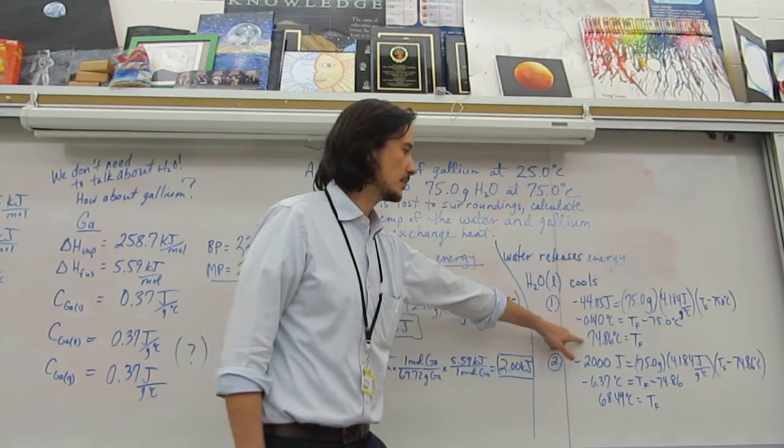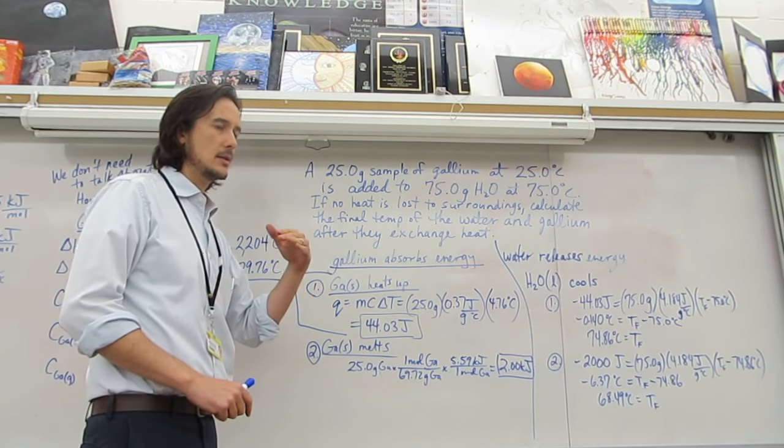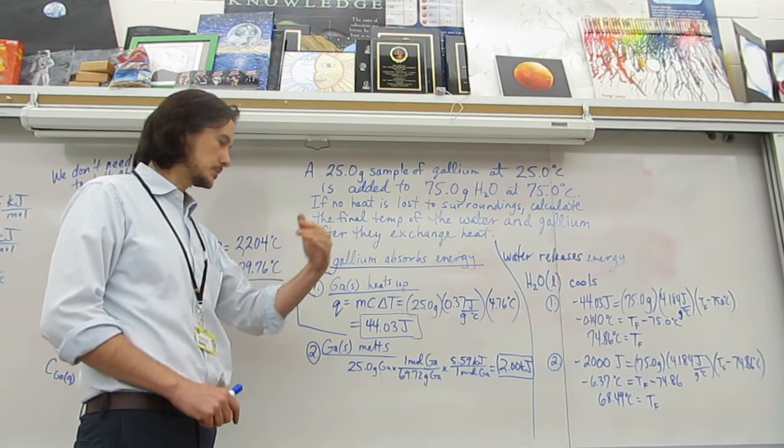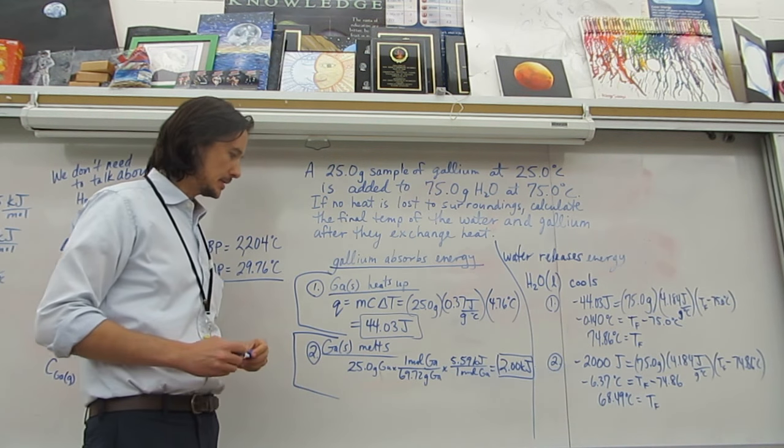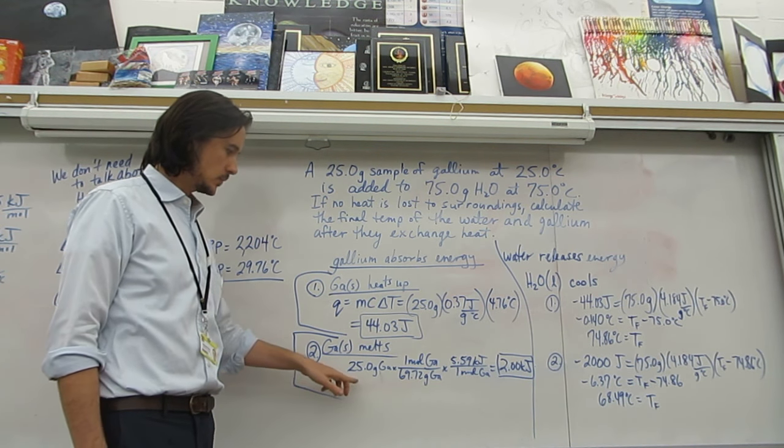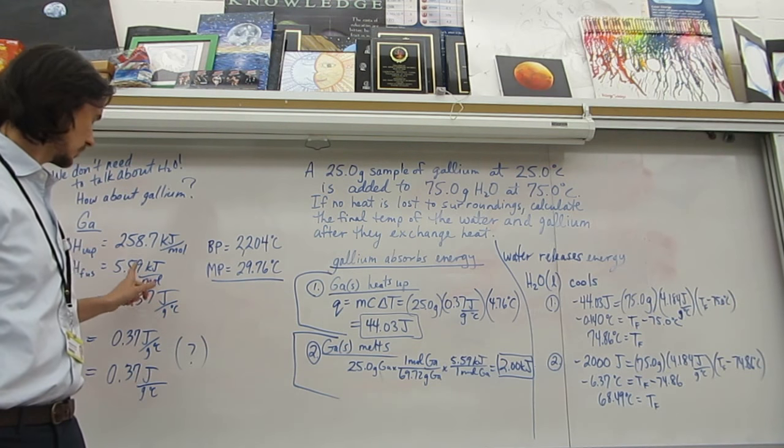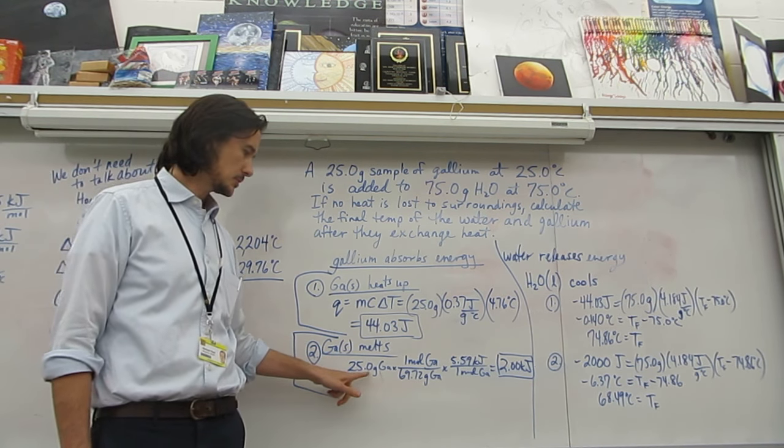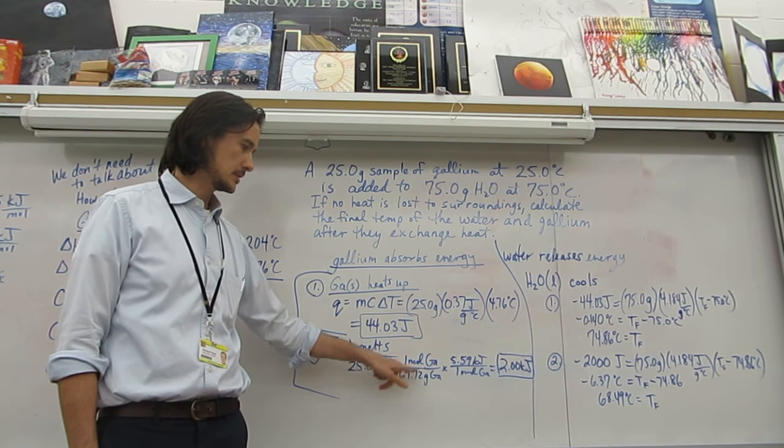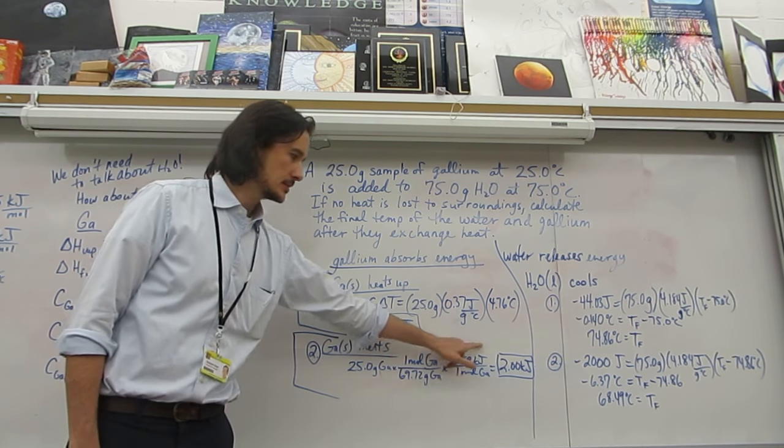Step two is the gallium melting. So we use the heat of fusion, but first we need to convert to moles. So 25 divided by the molar mass of gallium.